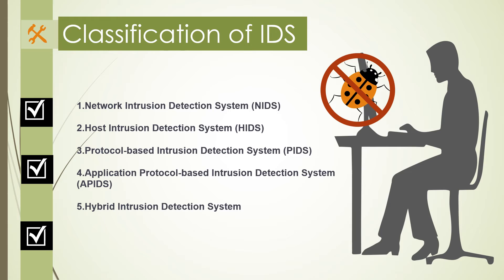The second type is Host Intrusion Detection System (HIDS), which runs on independent hosts or devices on the network. HIDS monitors the incoming and outgoing packets from the device only and alerts the administrator if suspicious or malicious activity is detected. It takes a snapshot of existing system files and compares it with the previous snapshot; if files were edited or deleted, an alert is sent to the administrator. HIDS usage is seen on mission-critical machines not expected to change their layout.